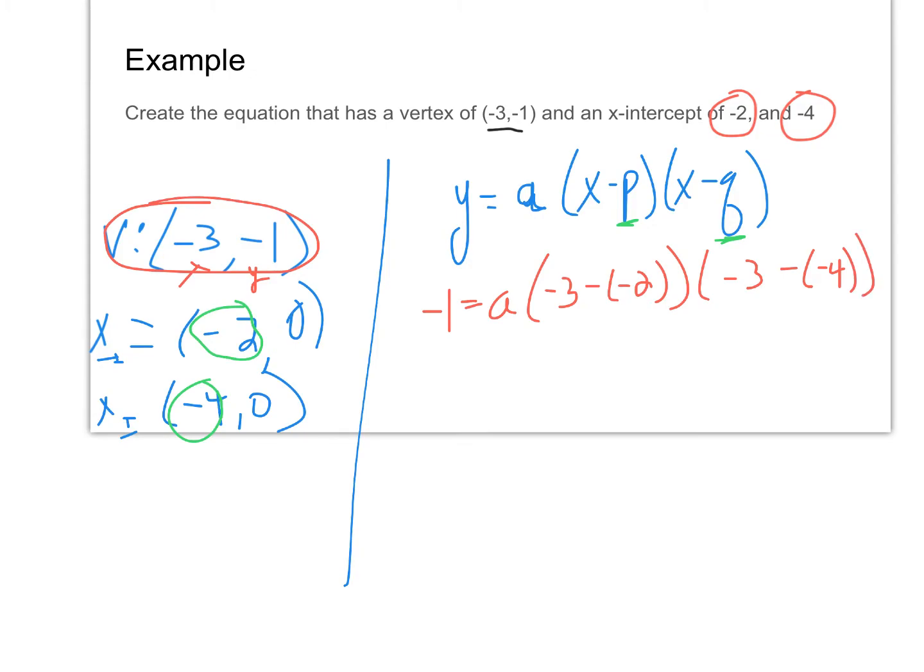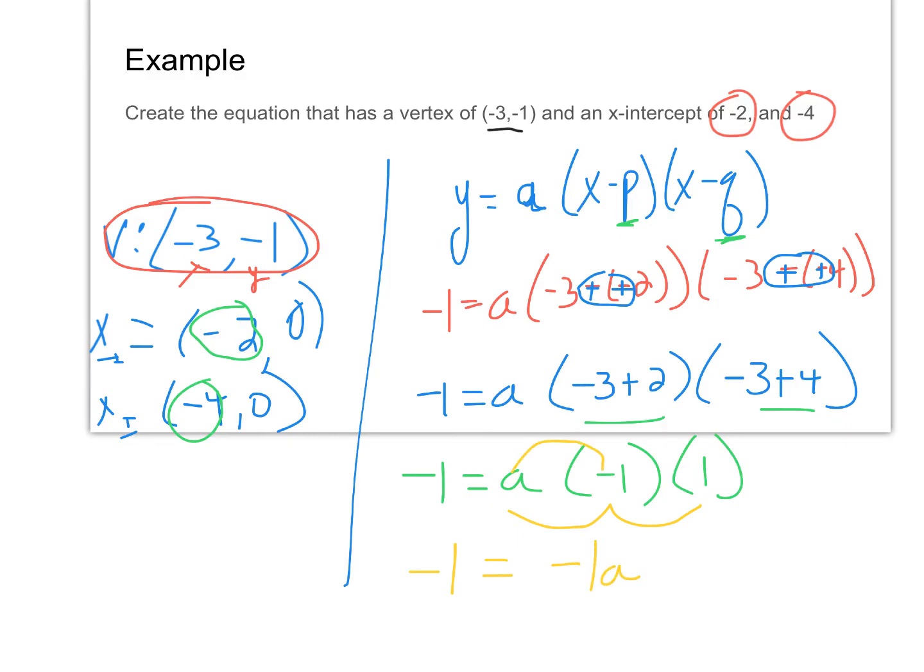Now what we're going to do is do the math inside the parenthesis. So this double negative goes plus, this double negative goes plus. So negative one equals A times negative three plus two times negative three plus four. So now we're going to do the math. Negative one equals A times negative one times positive one. So negative one equals negative one A.